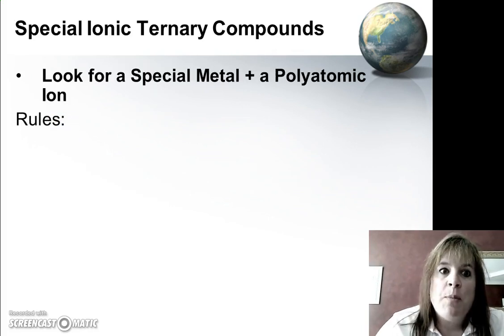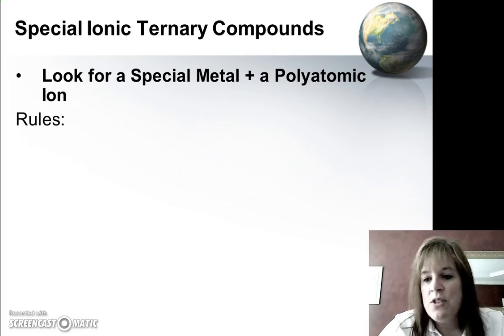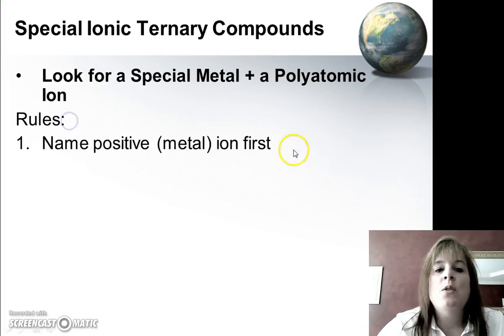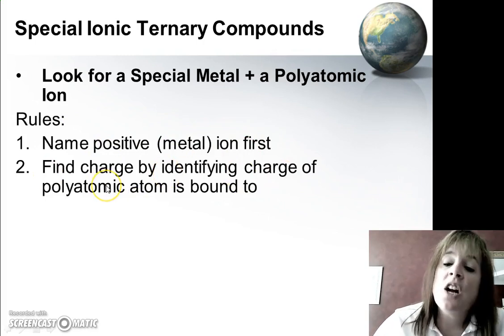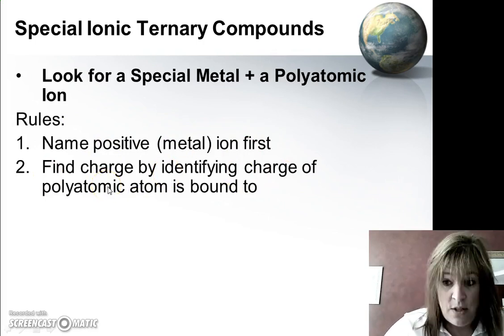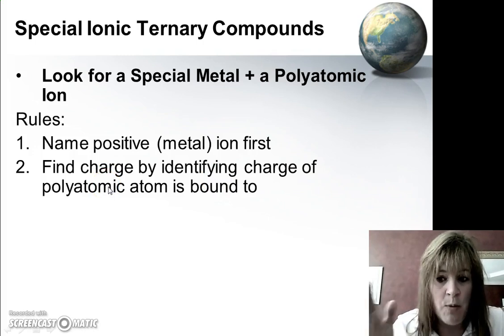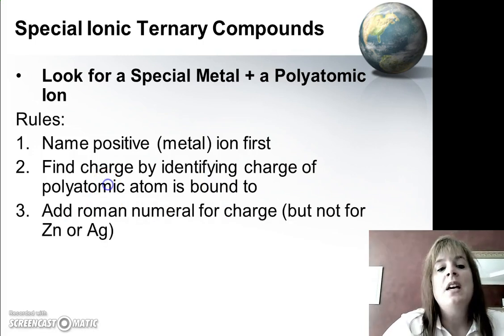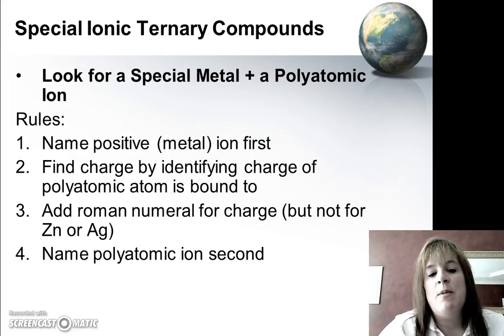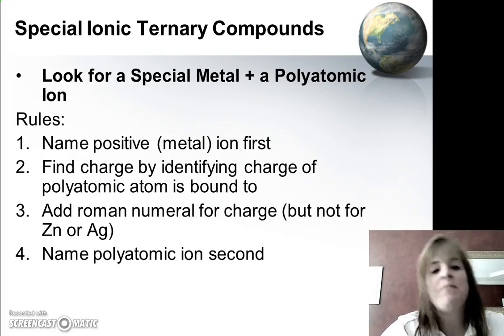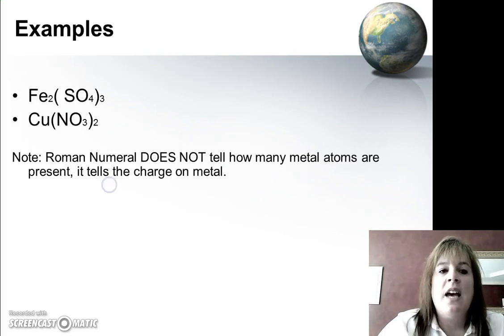Now what about if there's a polyatomic ion? Well, the rules are just the same as they are for naming with polyatomic ions, except now we have to have that Roman numeral. So name our first metal first. Find the charge by identifying the charge on the polyatomic ion that it's bound to. So now instead of a single element, we have that polyatomic ion. So we add our Roman numeral for charge, but again, not for zinc or silver. And then we name the polyatomic ion second. No changing of endings.